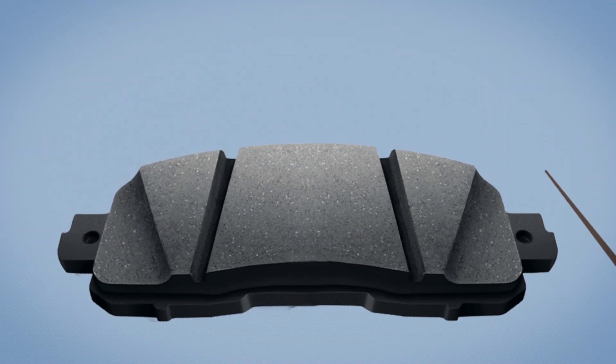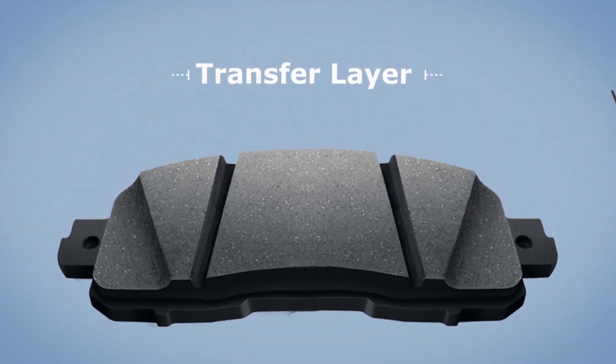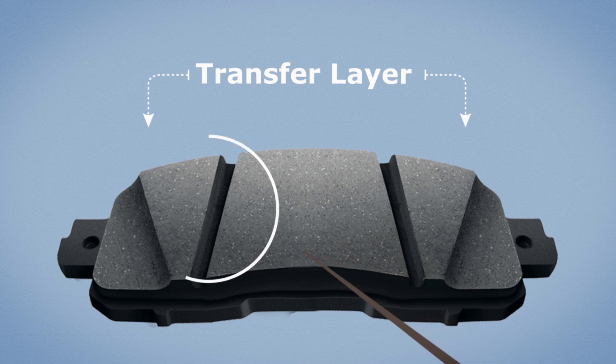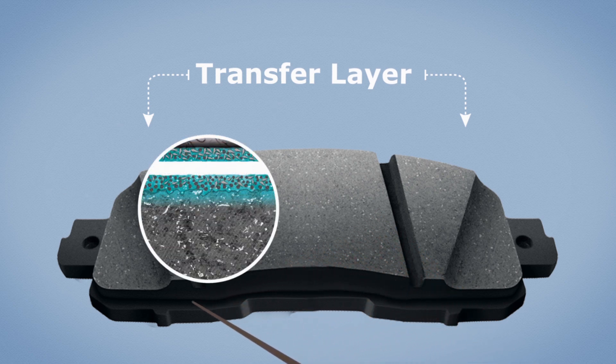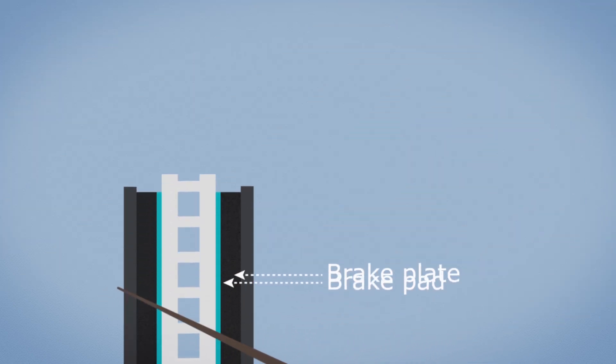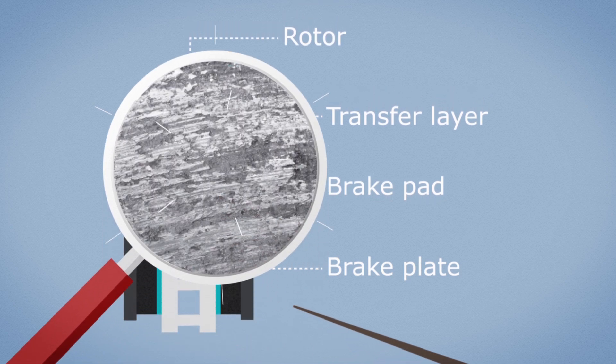Bosch has constantly been testing its formulas until it has chosen the ideal selection of types and sizes of chemicals that form a protective layer on the surface of the rotor and pad. This layer can sometimes be visible even with the naked eye.